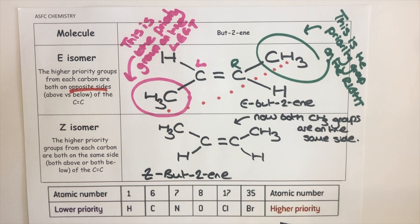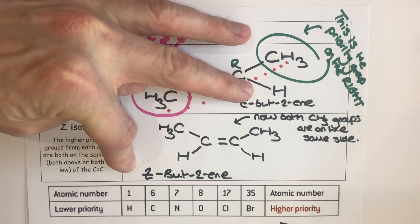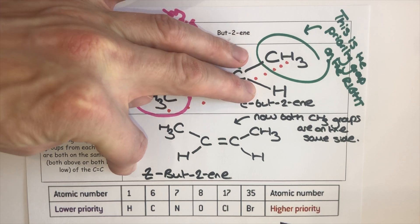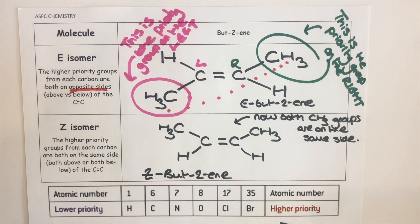We can introduce the E or Z letters to the front of the alkene name if asked to in the exam, and these isomers can also be drawn in skeletal formula — check the front cover of your notes for that. Remember: increasing atomic number means increasing priority.